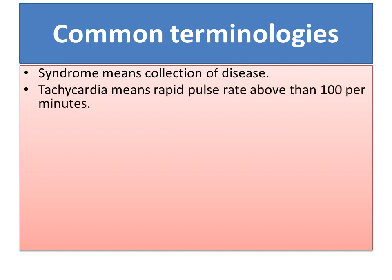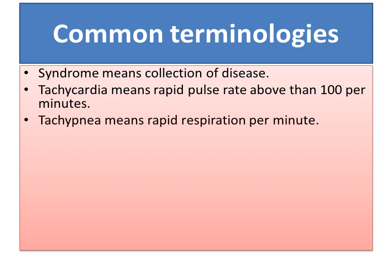Tachycardia means rapid pulse rate above 100 beats per minute. Tachypnea means rapid respiration per minute. The normal respiratory rate is from 12 breaths per minute to 22 breaths per minute, so if the rate is increased above this normal range, we call that tachypnea.